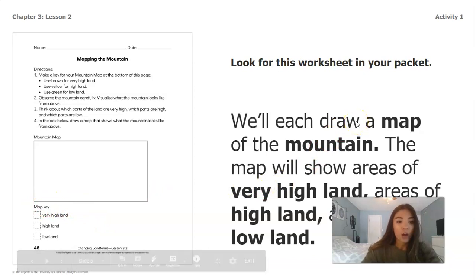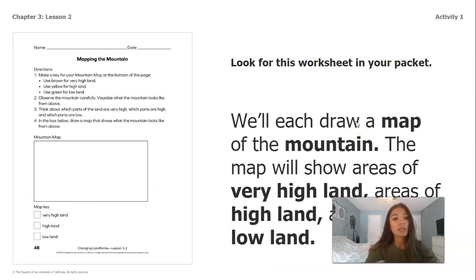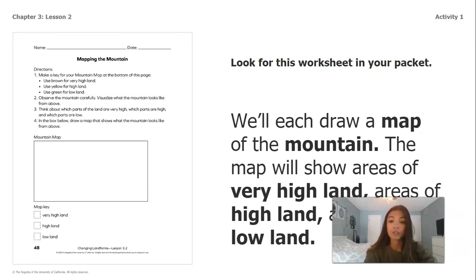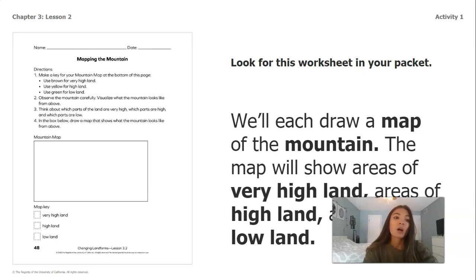We're going to be using brown to show very high land, yellow for high land, and then green to show low land. After we color in our key, we're going to look very carefully at the picture of the mountain and visualize what it might look like from above, or from a bird's eye view. Then we're going to think about which parts of the land are very high, which parts are high, and which parts are low.